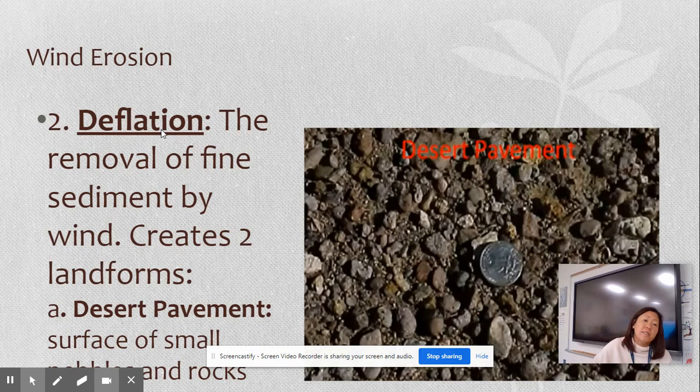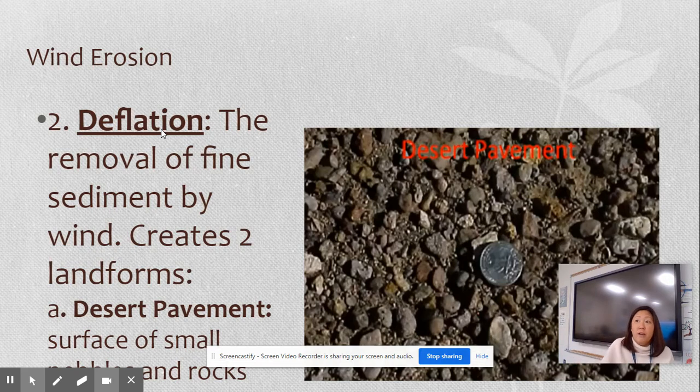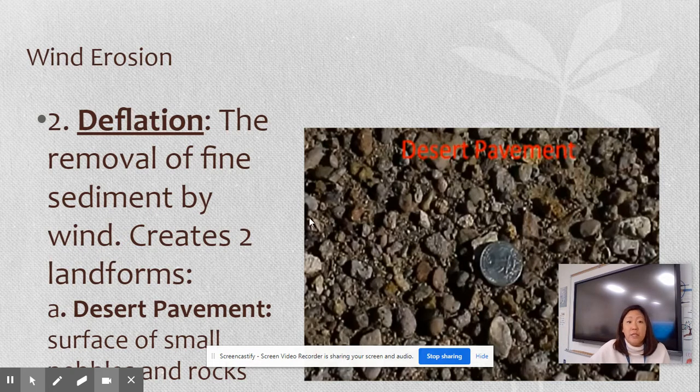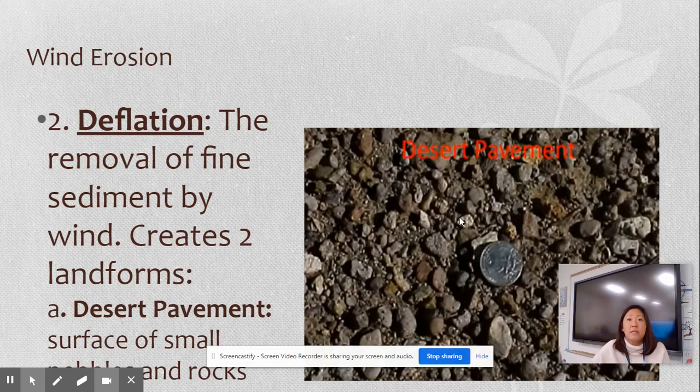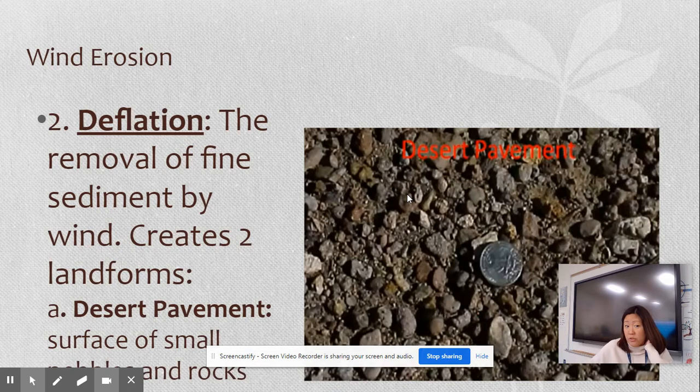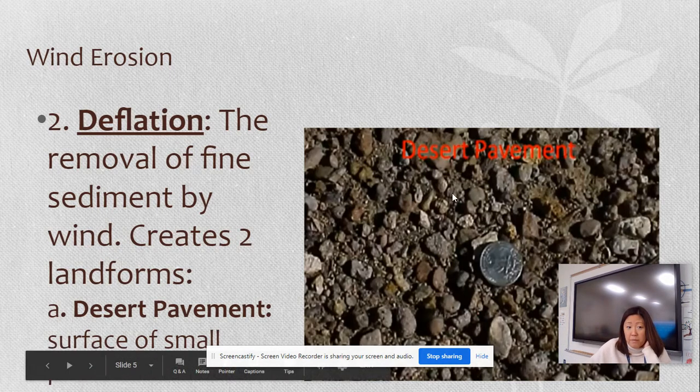Okay. All right, the second word is something called deflation, where it sounds very similar to if you're deflating a balloon. Say like you have a birthday balloon and you deflate the birthday balloon. You literally, what you're doing is you're letting all of the air out. And that's actually what happens here as well. So when you're talking about deflation, you're talking about when that wind blows, it removes all the sediment off the pavement. And when it does that, it creates two different things. One of which is called desert pavement, which desert pavement is simply just the surface of small pebbles and rocks.